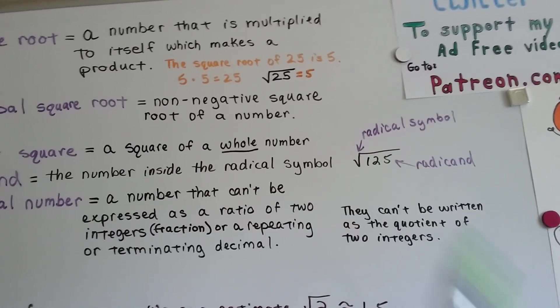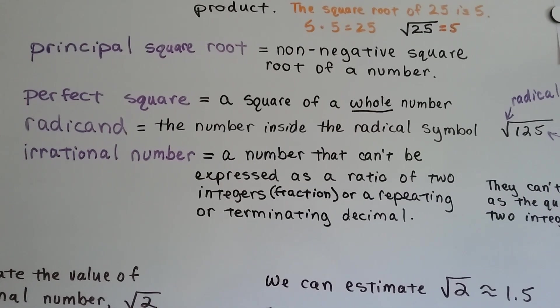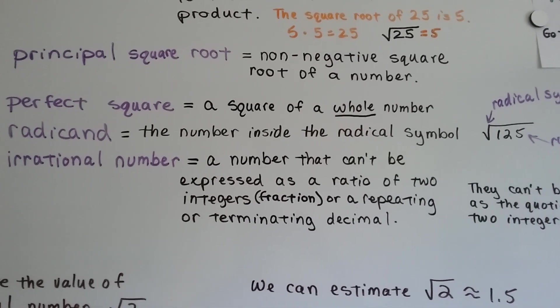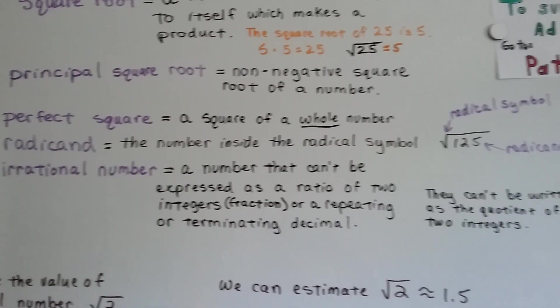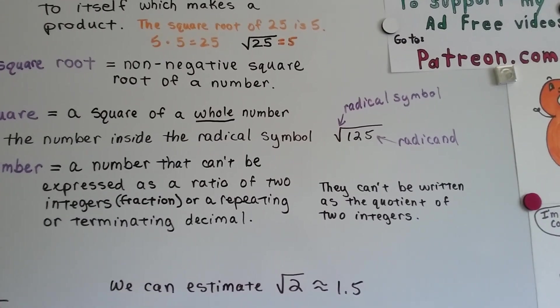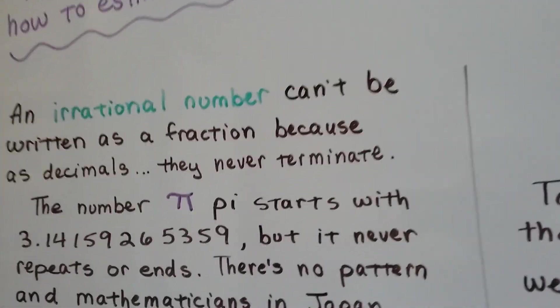An irrational number is a number that can't be expressed as a ratio of two integers. It can't be a fraction or a repeating or terminating decimal. They can't be written as the quotient of two integers. That's what irrational numbers are.